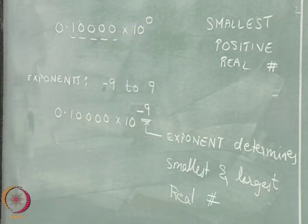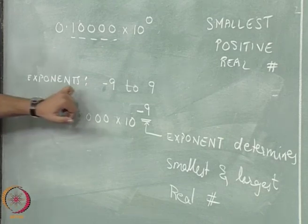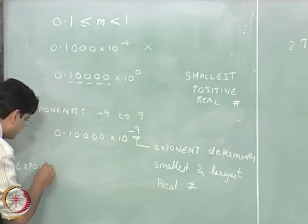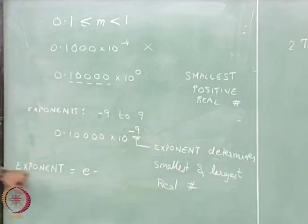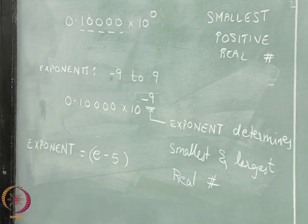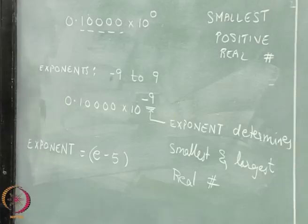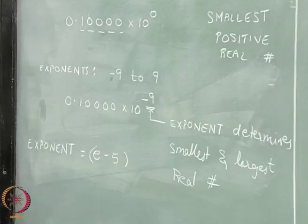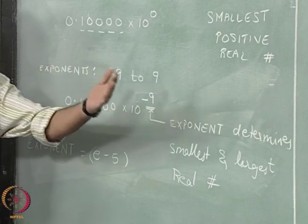One thing we can do to admit both positive and negative exponents using a single digit is to redefine the exponent. Rather than saying E is the exponent directly, we represent the number as M multiplied by 10 to the power E minus some constant. We use the constant 10 divided by 2, which equals 5. This allows us to admit both negative and positive values of the exponent.